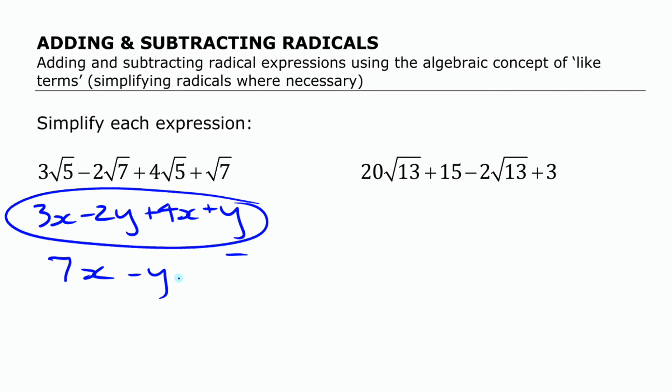So this expression simplifies to 7x minus y. It's no different for what we have here. The only difference is these aren't variables, they're these irrational numbers: square root of 5, square root of 7. So in exactly the same way, if we have 3 root 5 and we have plus 4 root 5, we can combine those together to make 7 root 5.